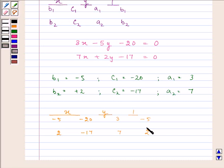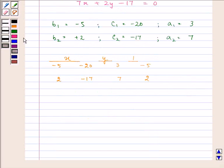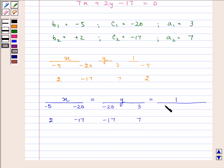Now, to obtain the solution, write X, Y, and 1 separately with an equality sign. The first two columns, that is, minus 5, 2, minus 20, and minus 17 will be written under X. The second and third column, that is, minus 20, minus 17, 3, and 7 will be written under Y. And 3, 7, minus 5, and 2 will be written under 1.